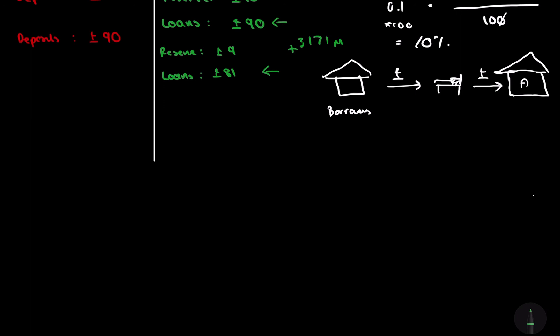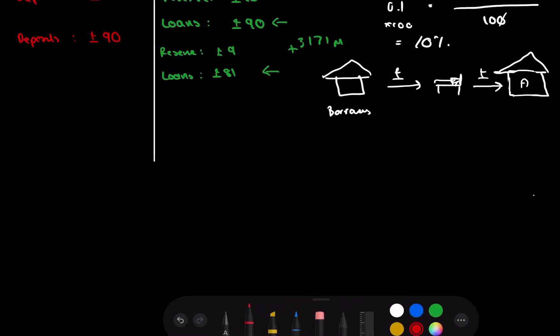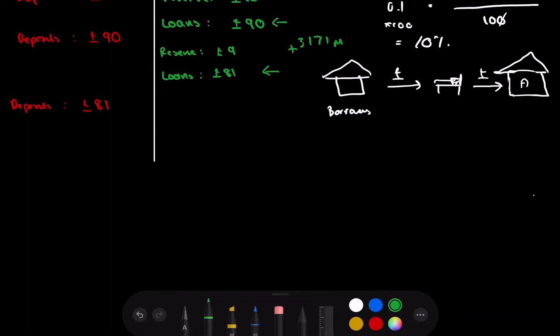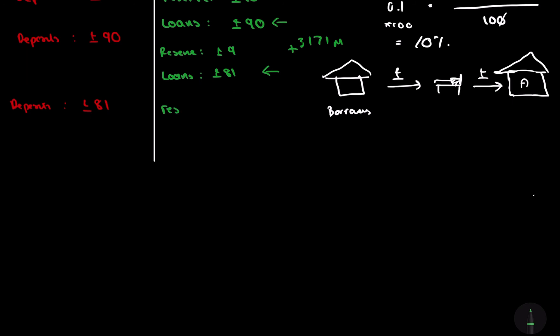And after a while, this 81 million will come back as deposits. And you can guess what this is going to be. It's going to be 81 million. And now we can restart the process. Reserve. Remember our 10% liquidity ratio. That's going to be 8.1 straight to the Bank of England. And loans are going to be some number 70 something million.